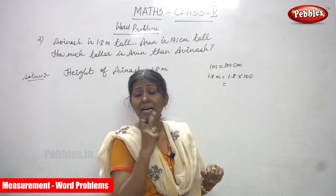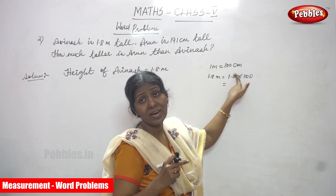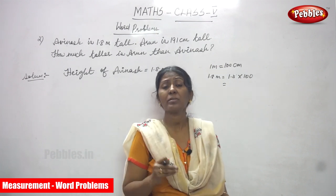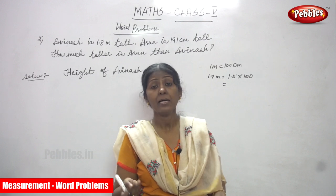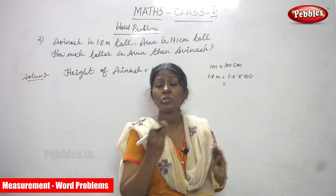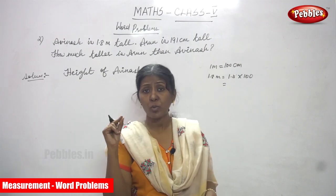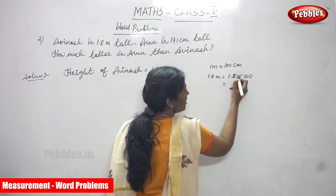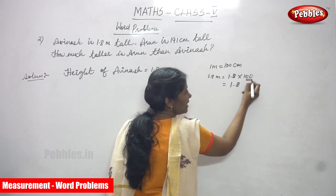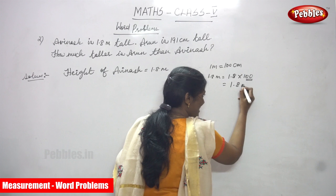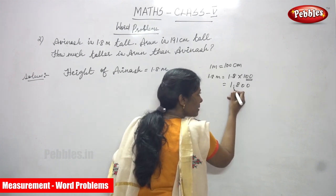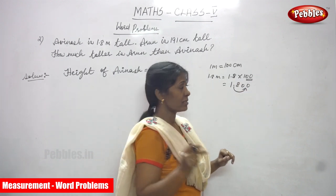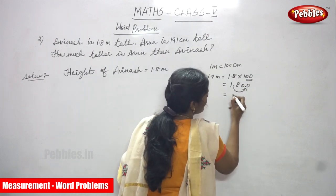Here, meter into centimeter. 1 meter is equal to 100 centimeters. 100 centimeters is equal to 1 meter — that is the formula. According to the question, I have written 1 meter equals 100 centimeters. Since 1.8 meters is given, I have written 1.8 into 100. How many zeros in 100? Two zeros. You move the decimal point two places to the right. So the answer is 180. After the point there is zero — no value, just cross that. The answer is 180 centimeters.